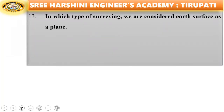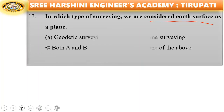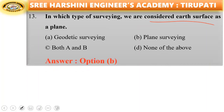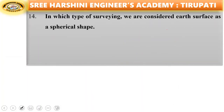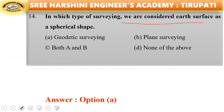Next question: in which type of surveying do we consider the earth's surface as a plane? Options: geodetic surveying, plane surveying, both A and B, none of the above. The answer is plane surveying — in plane surveying the surface is considered as a plane.